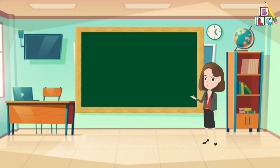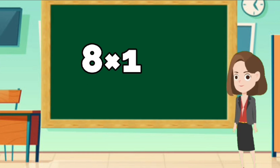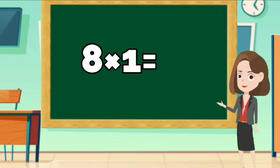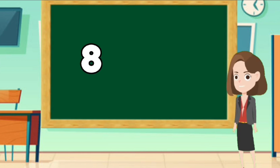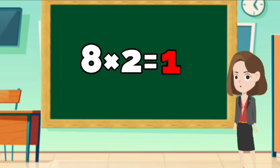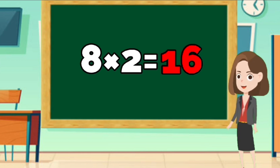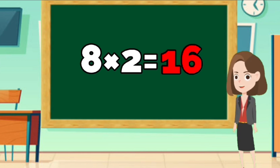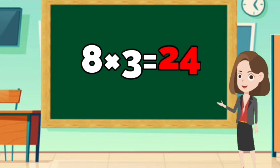Let's learn Table of Eight. 8 times 1 is 8. 8 times 2 is 16. 8 times 3 is 24.